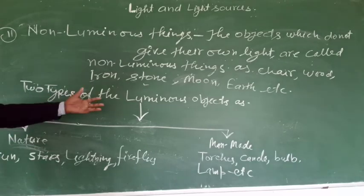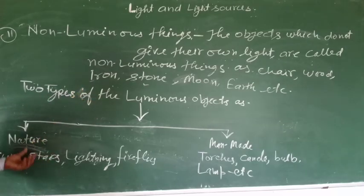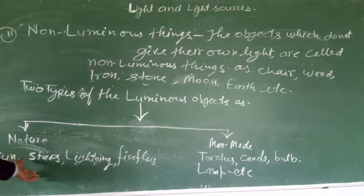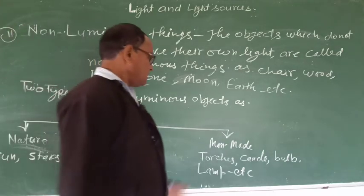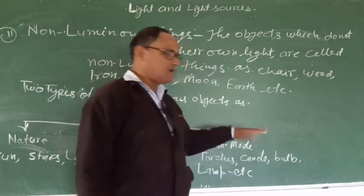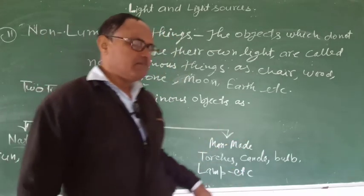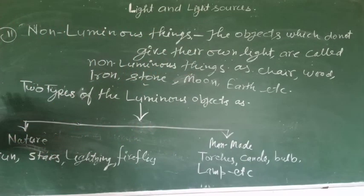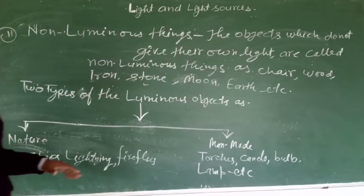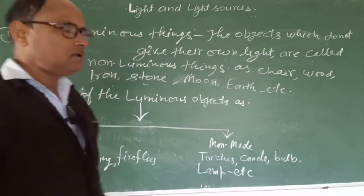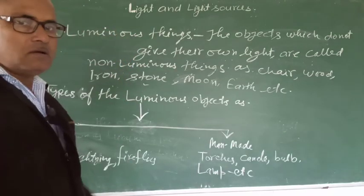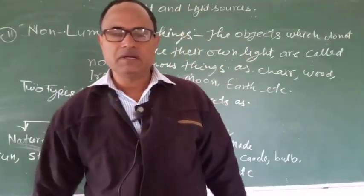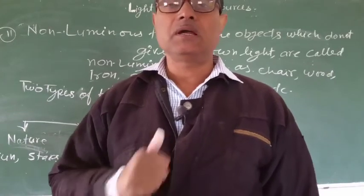There are two types of luminous objects — some are natural and some are man-made. Natural ones include sun, star, lightning, and firefly. Man-made ones include torches, candle, bulb, lamp, and light. These concepts are very important. You learn all. Then after this, the next topic I will teach you tomorrow.